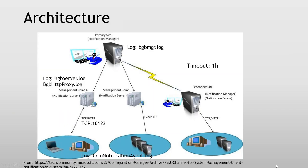There's a picture from the tech community site showing what happens. We have a BGBMgr.log file which we can monitor — what's being sent out there. The management points are notification servers and they will be responsible for the messaging itself. On the clients, we have a CCM notification agent log which will take care of it. Basically it will stay there and listen on TCP port 10123. If that's not available or you haven't opened it in a firewall, it will fall back to 80 or 443 to keep the channel alive.